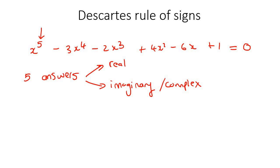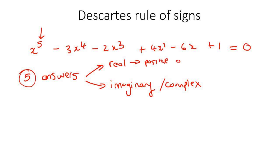So, the fundamental theorem of algebra says that there would be 5 of those. But what Descartes' rule of signs helps us to do is it helps us to try to get a better idea of how many of these 5 are going to be real — which would be either positive or negative — and how many of them would be imaginary. It only gives us possibilities, the possible scenarios. So let me show you how it works.